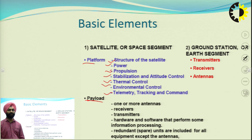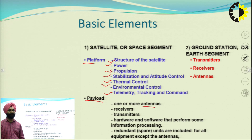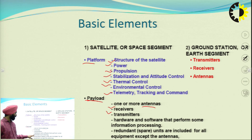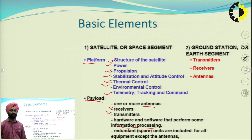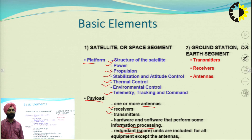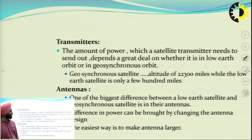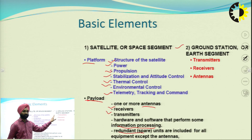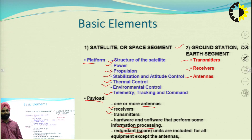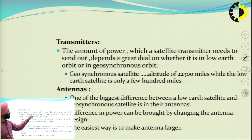The payload is the basic heart of the satellite that transmits, receives, and processes information used by all ground stations. The payload includes one or more antennas for communication and control signals, receivers, transmitters, and information processing — though processing may or may not be present, the conversion of uplink to downlink will always be there. The ground station includes transmitters, receivers, and antennas.